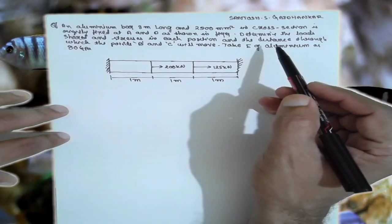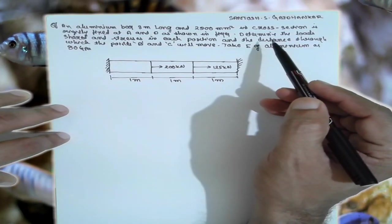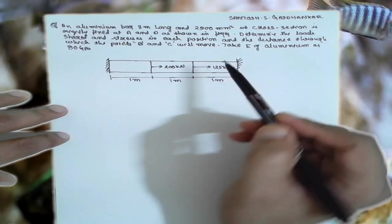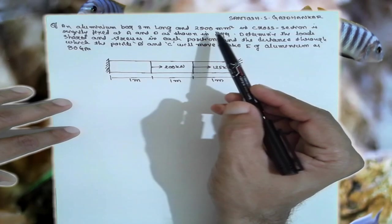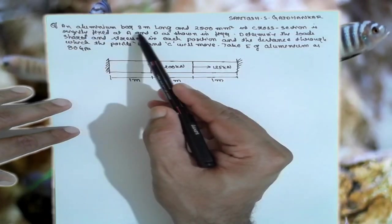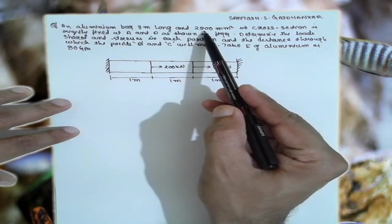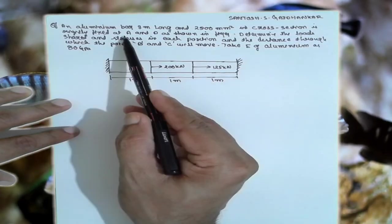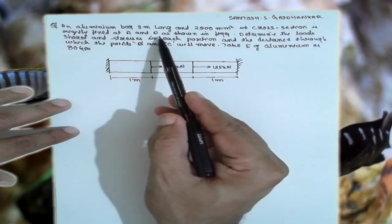I am Santosh Gadankar. Today I am teaching you mechanics of materials. In this topic, indeterminate structure, that is both ends are fixed. This is the problem: an aluminum bar 3 m long and 2500 mm square cross-sectional area is rigidly fixed at A and D as shown in the figure.